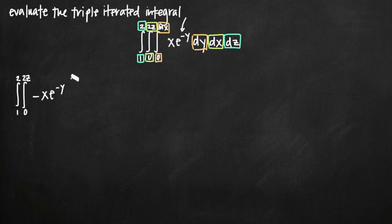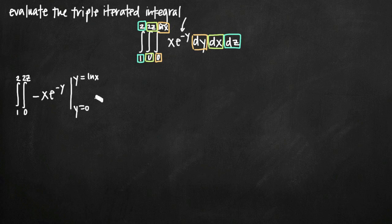We're evaluating this on the interval 0 to ln of x. Because we're integrating with respect to y, it's important to write y equals 0 and y equals ln of x. If we didn't, we might mistakenly plug these values in for x instead of y. These limits only apply to y. Then we leave dx and dz for the remaining integrations.